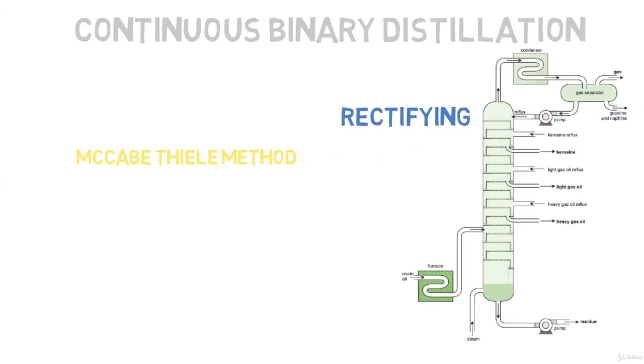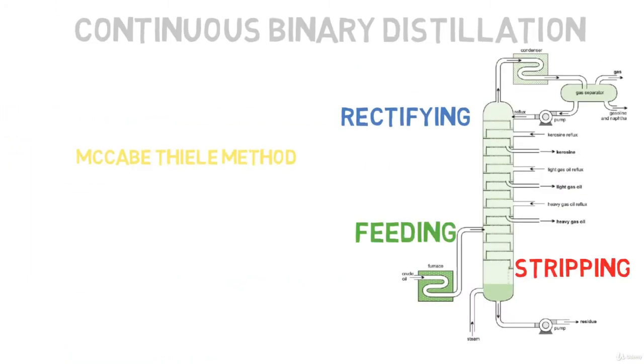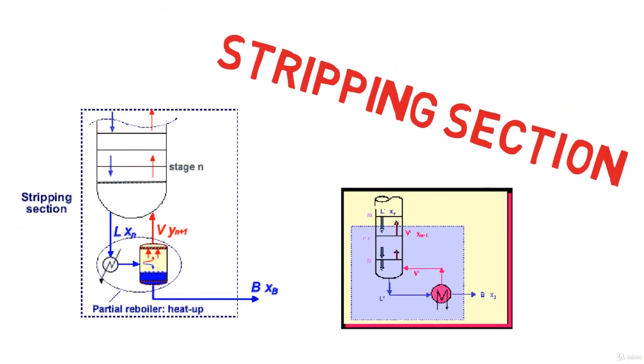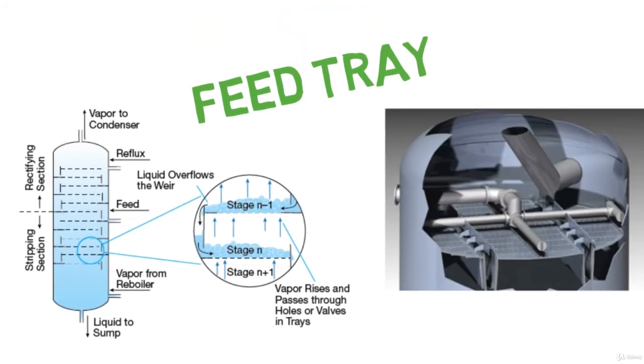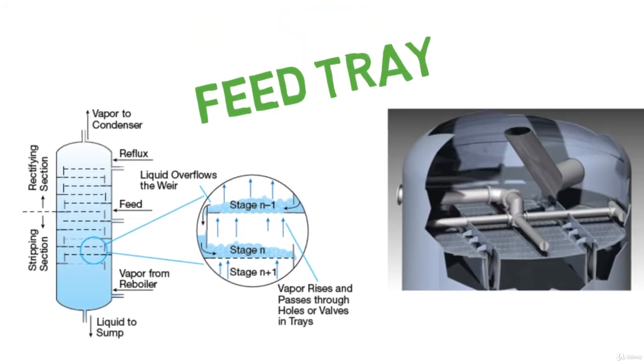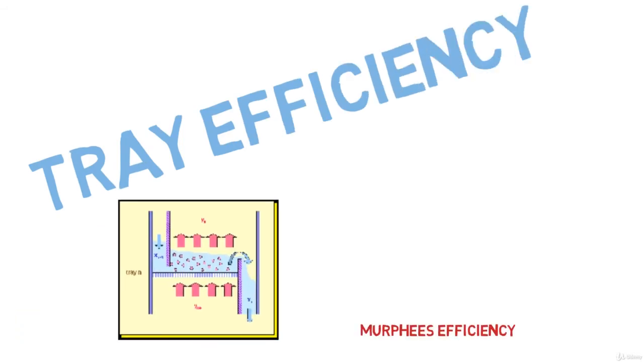We continue our analysis on the rectifying section, in which we enrich or purify our distillate. The stripping section comes next, in which we purify our bottom product. Then we get to know what is the recommended feed tray for the complete feed of the column, verify the recommended reflux for our operation, and eventually verify our tray efficiency.